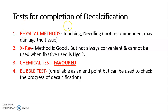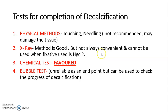The endpoint of decalcification can be noted by physical method, X-ray, chemical method, or bubble test. The physical method involves touching or needling, but this is not recommended as it may damage the tissue. X-ray is a good method but is not always convenient, and cannot be used when the fixative used is mercuric chloride.